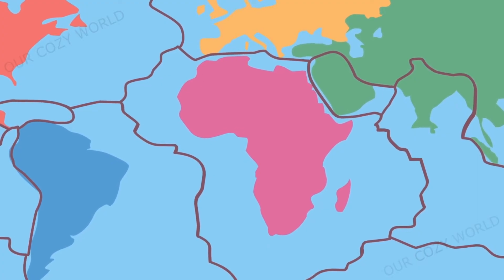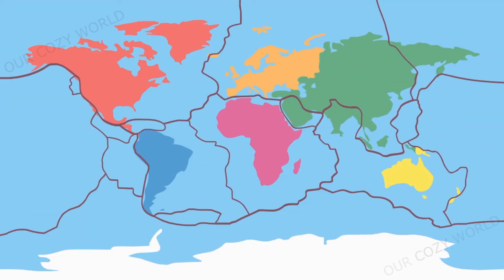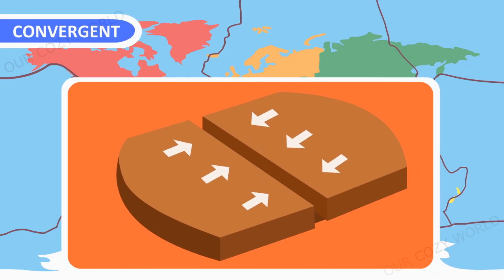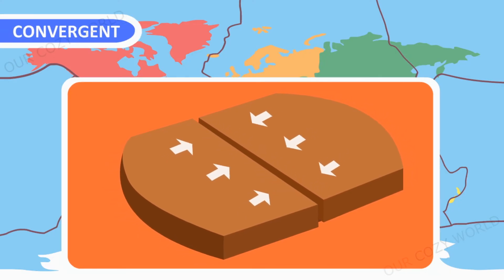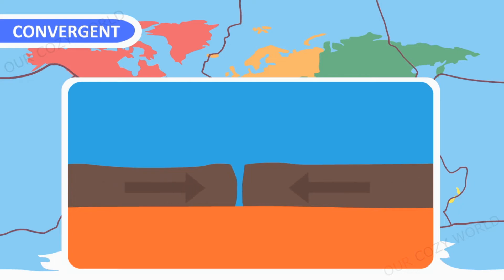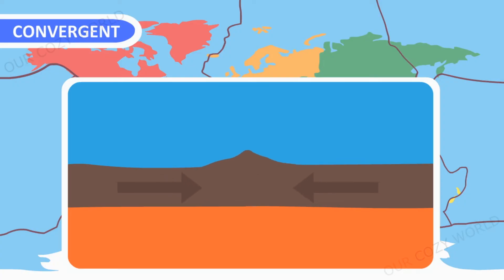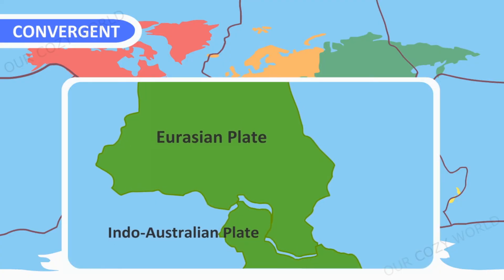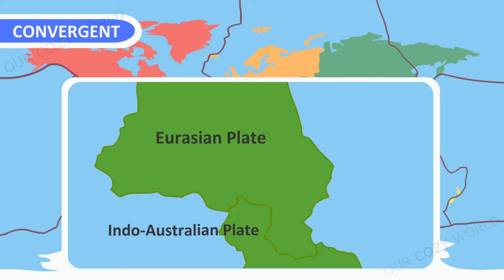Plates can move towards each other, and there are three options here. The first option is a collision of two continental plates. Because both plates have the same density, neither can sink beneath the other; therefore they bend and deform, thereby forming mountains. For example, the collision of the Indian and Eurasian plates formed the Himalayas 50 million years ago.